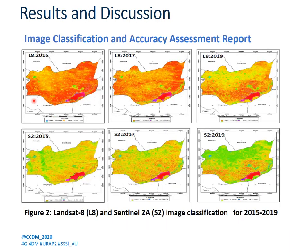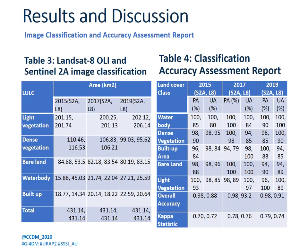This is the image classification accuracy report for 2015 to 2019 for Landsat-8 and Sentinel-2A. Tables 3 and 4 show classification in terms of area size between Sentinel-2A and Landsat-8 for the different year periods. The classification accuracy, producer accuracy, and user accuracy comparisons between both sensors showed perfect agreement.